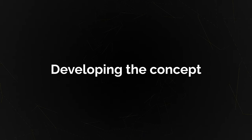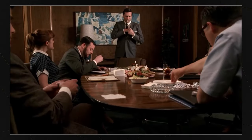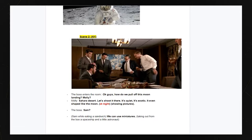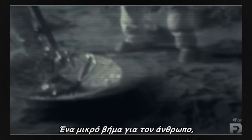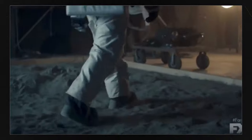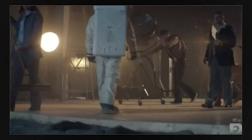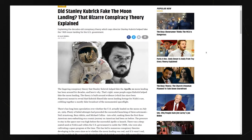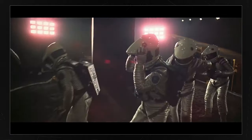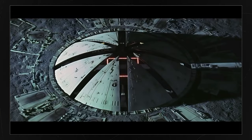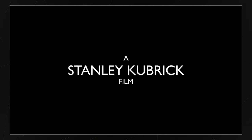Now let's talk about the research, references, and concept development. Inspired by a scene from the show Madman, we wrote a script about a team from a creative agency trying to come up with the best way to fake the moon landing. One of the classic moon landing conspiracy theories claims that the 1969 Apollo 11 moon landing was shot in a studio and was directed by none other than Stanley Kubrick.